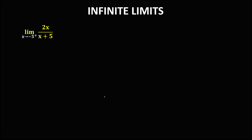Let's solve this problem. For these infinite limits, to evaluate the limit of 2x over x plus 5 as x approaches negative 5 from the right, we evaluate the numerator using direct substitution, so this becomes 2 times negative 5.